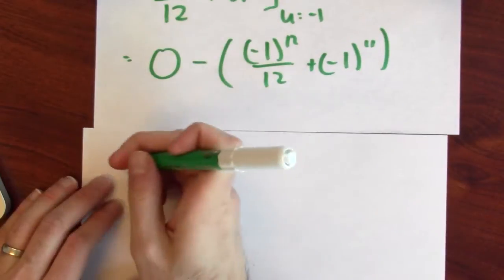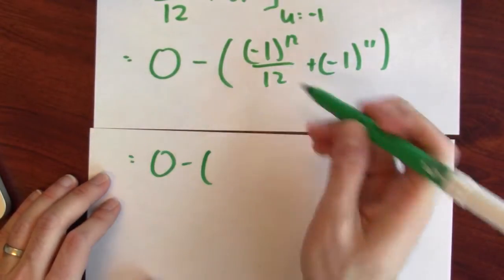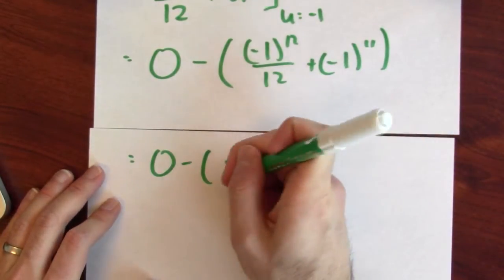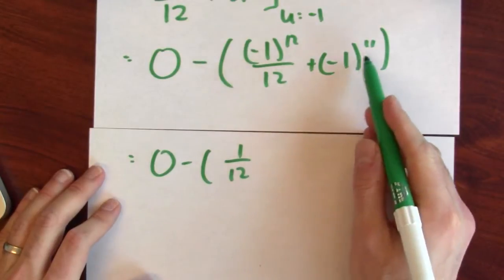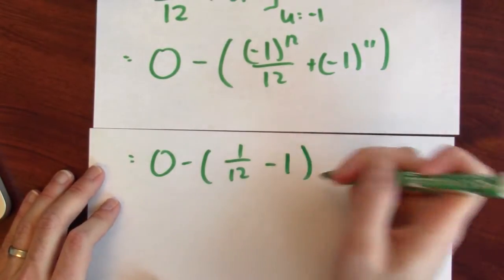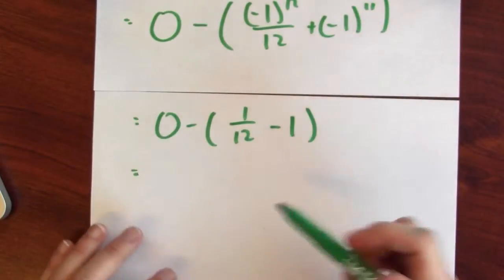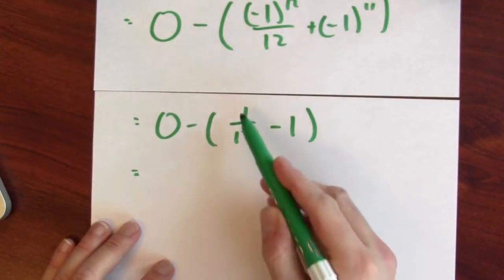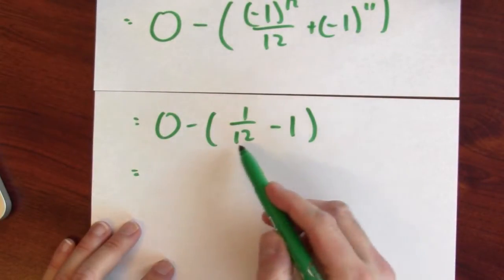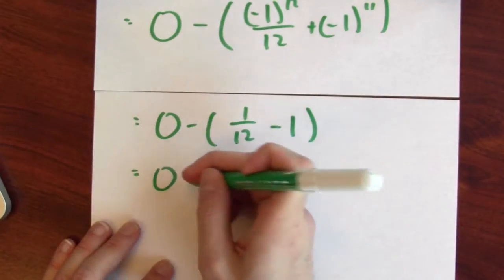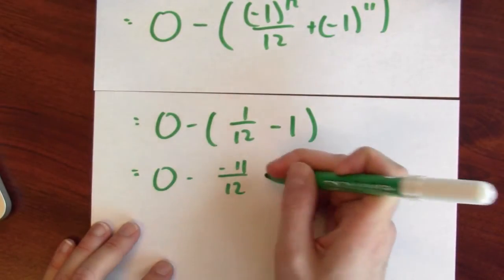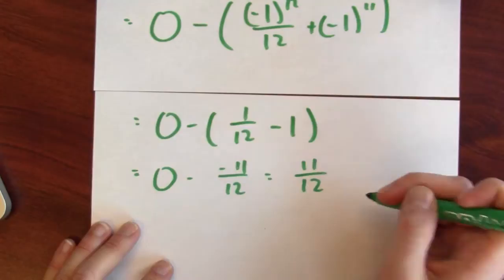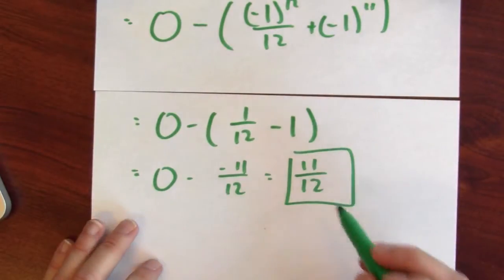Minus 1 to the 12th is just 1. So this is 1 12th. And minus 1 to the 11th, well that's negative 1. So I've got 0 minus, what's this? A 12th minus 1. That's negative 11 12ths. But it's 0 minus negative 11 12ths. So the integral is 11 12ths.